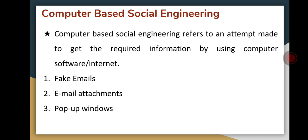The next category is computer-based social engineering — an attempt to acquire required information by using computer software or the internet. For example, sending a fake email to a user and asking them to re-enter their password on a webpage to confirm it. Attackers send fake emails to a large number of users who believe they are legitimate. This activity is called phishing.